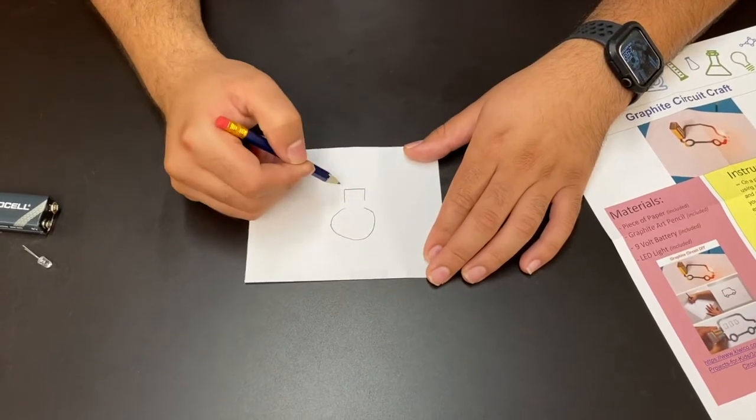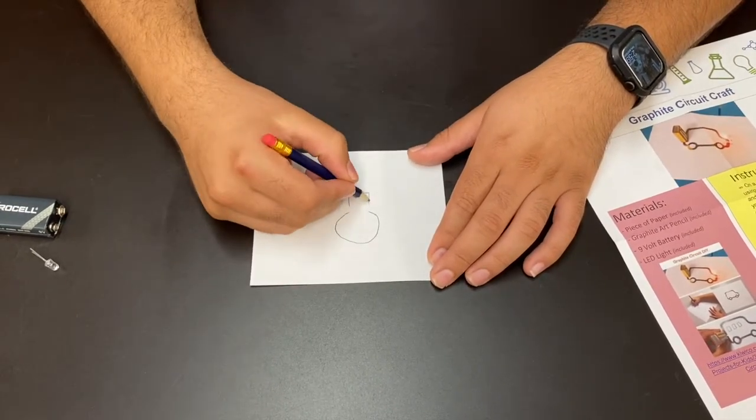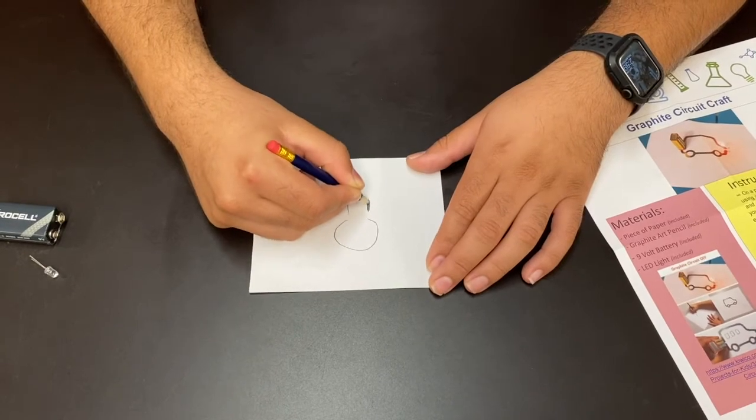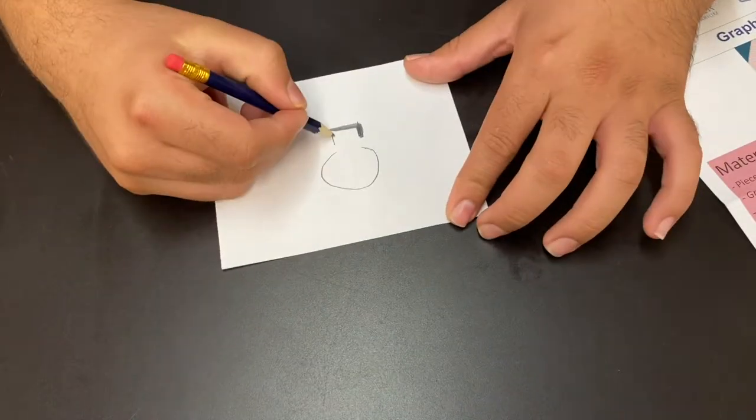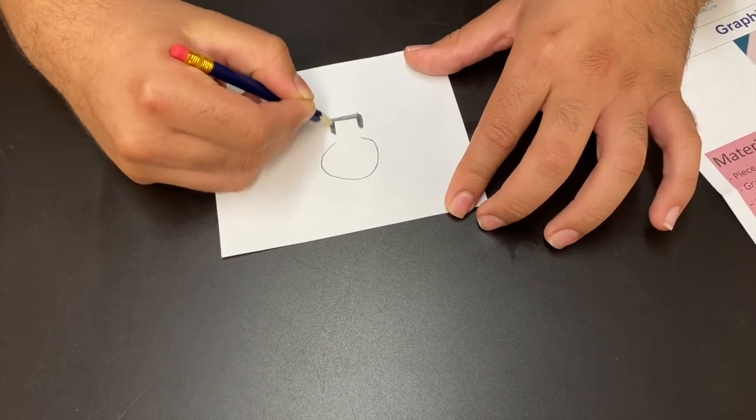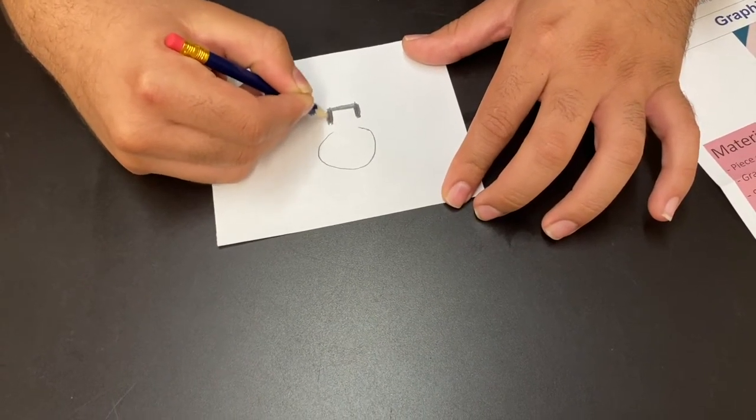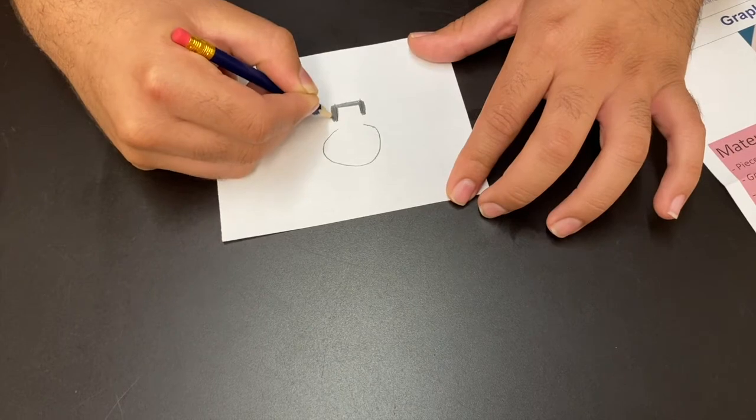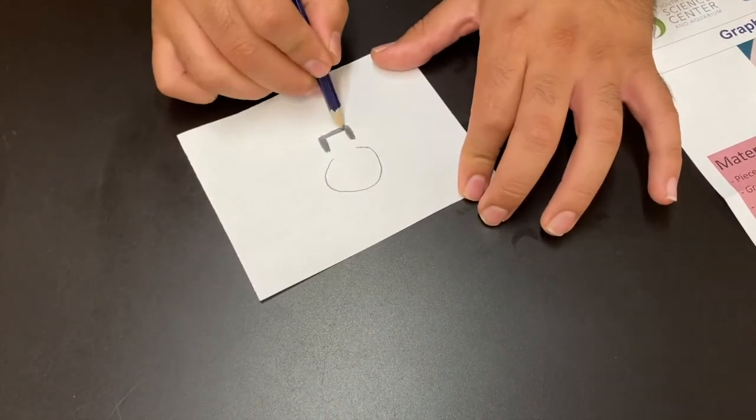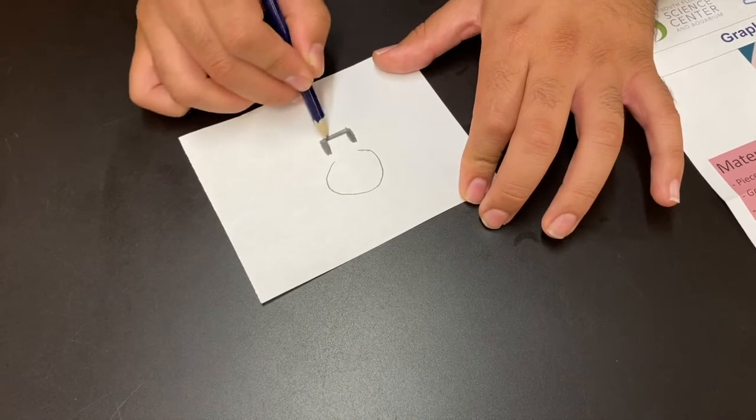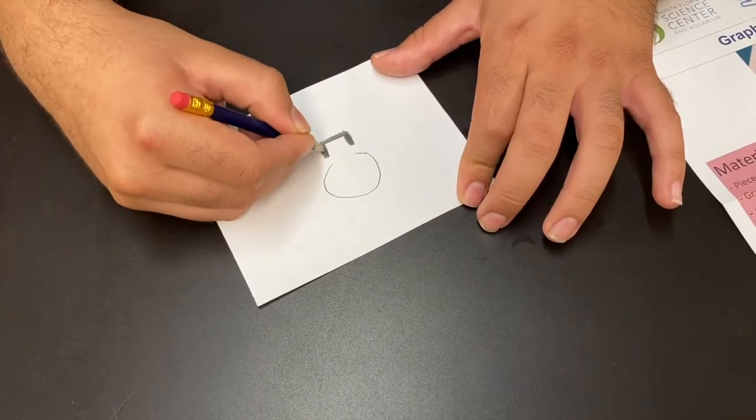Once you have the drawing drawn, you're going to fill or shade it in. Now, while graphite is conductive, there's not going to be too much of it found inside of your pencil shaving at any given time. So the darker and more you draw out your lines, the more graphite is going to be there. It's going to increase that conductivity and make it easier for the electricity to flow.